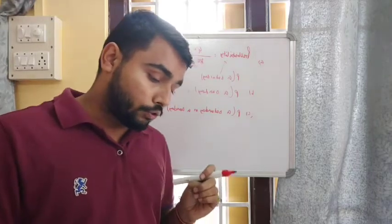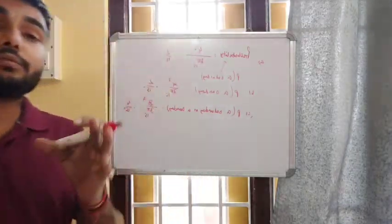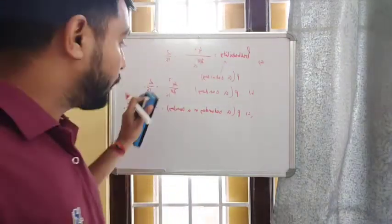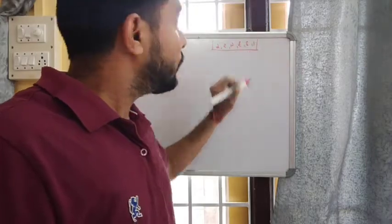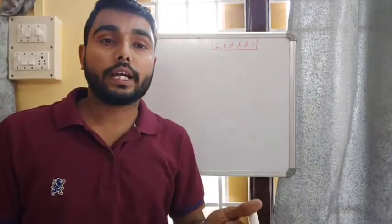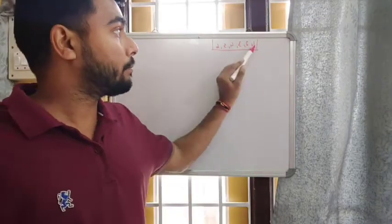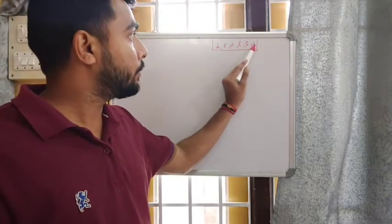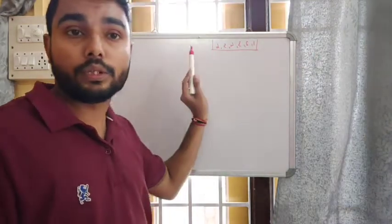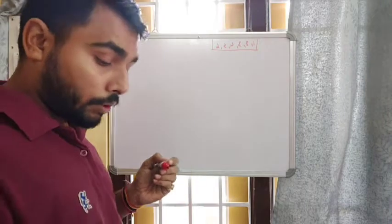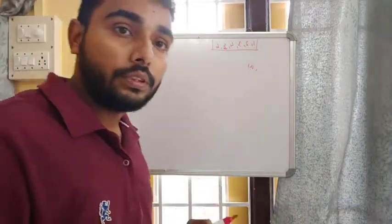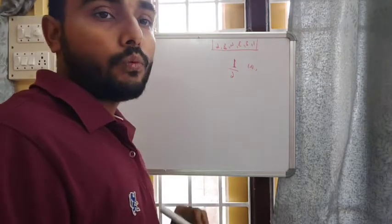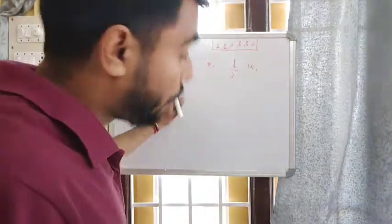Question number three: a normal die is rolled. Calculate the probability that the number on the uppermost face will be five. Whenever you roll a die you get six possible outcomes: one, two, three, four, five, and six. For number A, the probability of getting five — only one outcome is in favor of five out of the total six outcomes, so the probability is one by six.